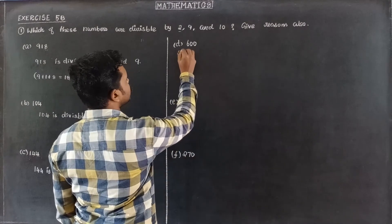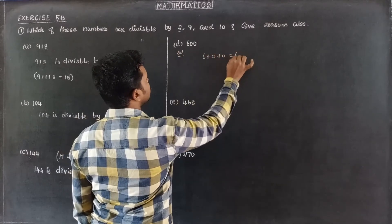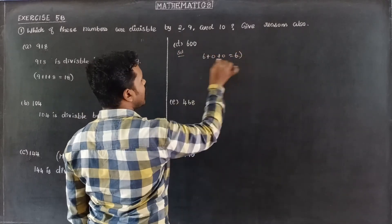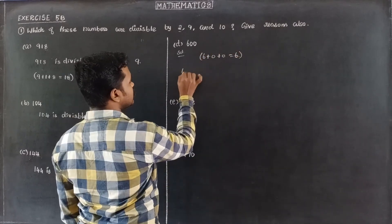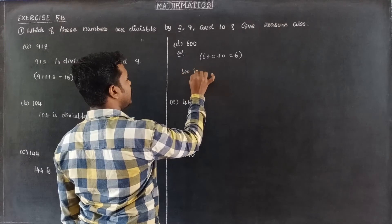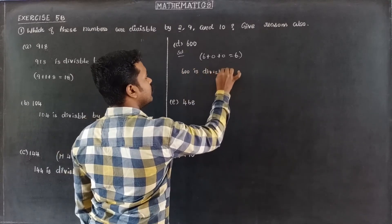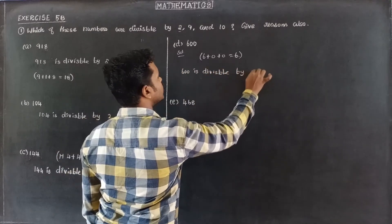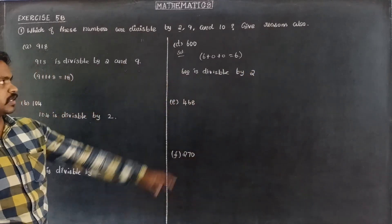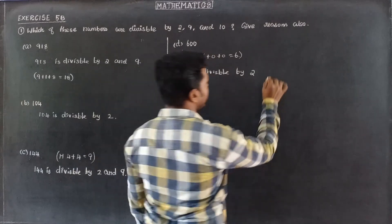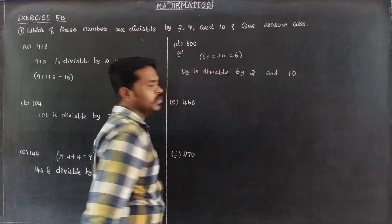Next, 600. The sum of the digits is 6 plus 0 plus 0 equals 6, which is not divisible by 9. The last digit is 0, so 600 is divisible by 10. It is also an even number, so it is divisible by 2. Therefore, 600 is divisible by 2 and 10.